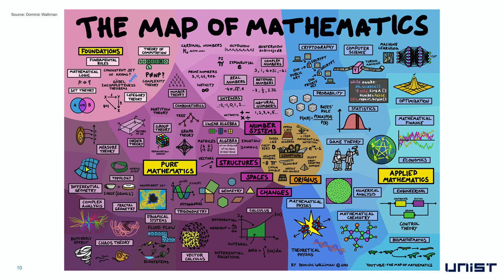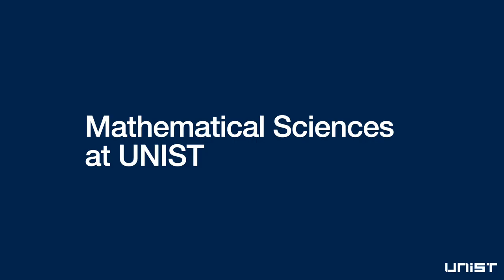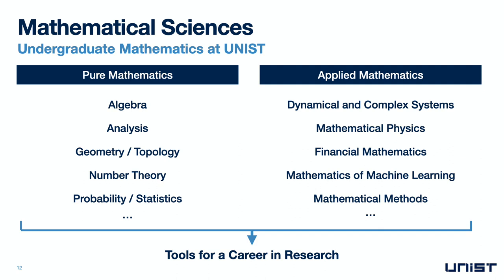In fact, new mathematical ideas and concepts arise in pure mathematics, which find direct applications in applied mathematics, and by extension to all the natural and engineering sciences. At UNIST, the department of mathematical sciences covers both areas of pure mathematics and applied mathematics. As a mathematics undergraduate student, you will learn the basic concepts and tools from pure mathematics, including algebra, mathematical analysis, geometry and topology, number theory, probability and statistics, and many other topics. You will also learn how these concepts are used in applied mathematics.